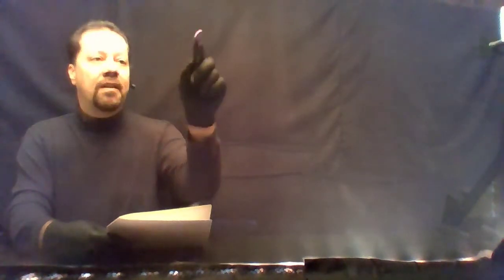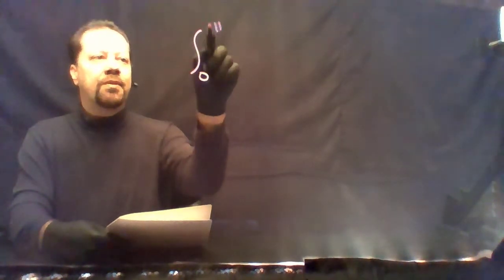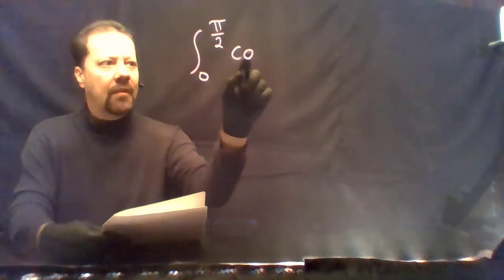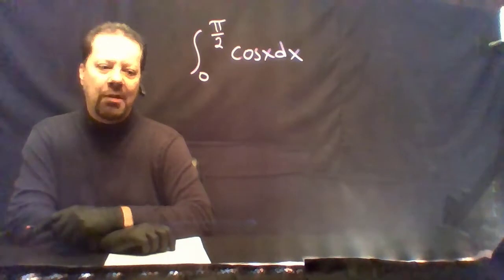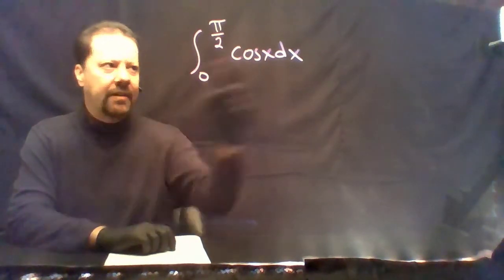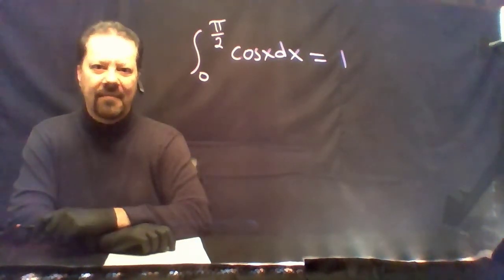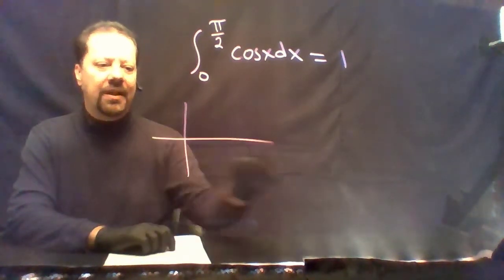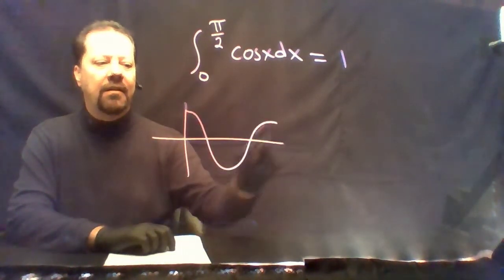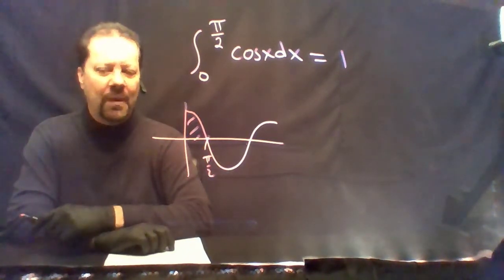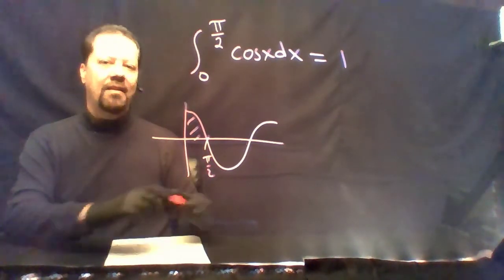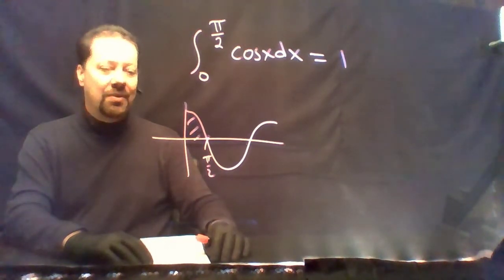Next, the integral from 0 to π/2 of cos(x) dx. I'll be terribly disappointed if you don't just write 1. We already know this is half a bump on the cosine curve, and half a bump gives you 1; one full bump gives you 2. You may solve this using the fundamental theorem of calculus, but that's overkill.